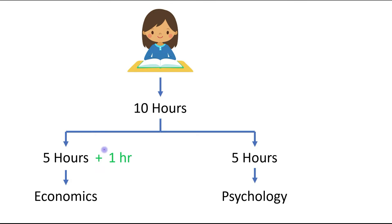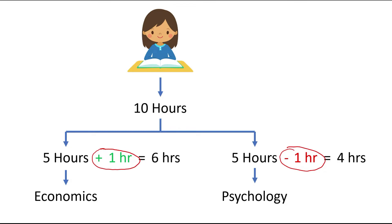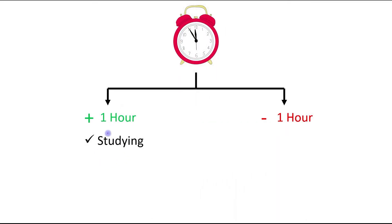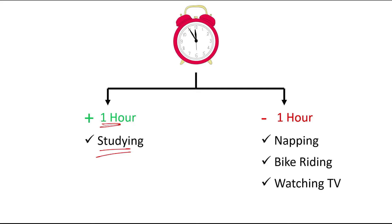For every hour she studies one subject, she gives up an hour she could have used studying the other. And for every hour she spends studying, she gives up an hour she could have used for napping, bike riding, watching TV, or working at a part-time job.